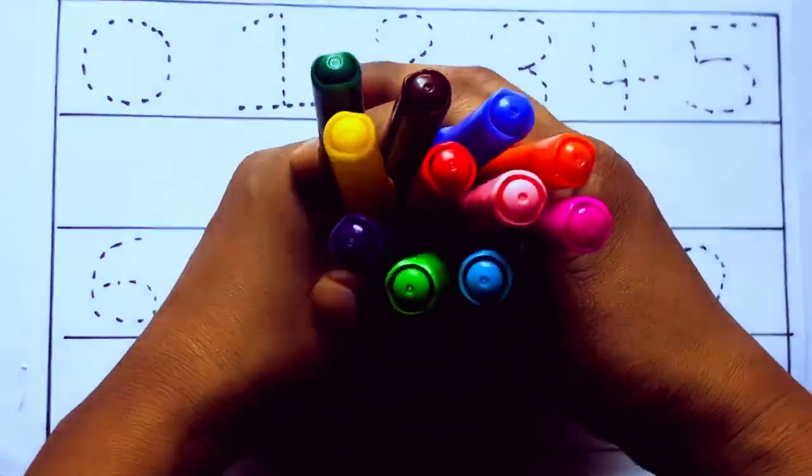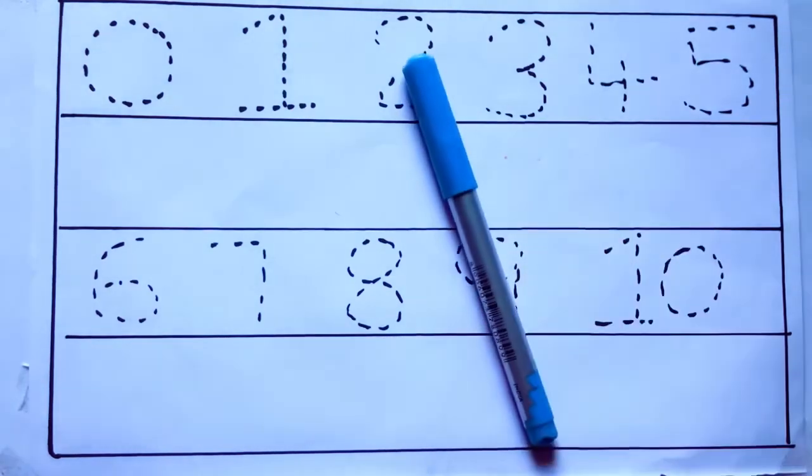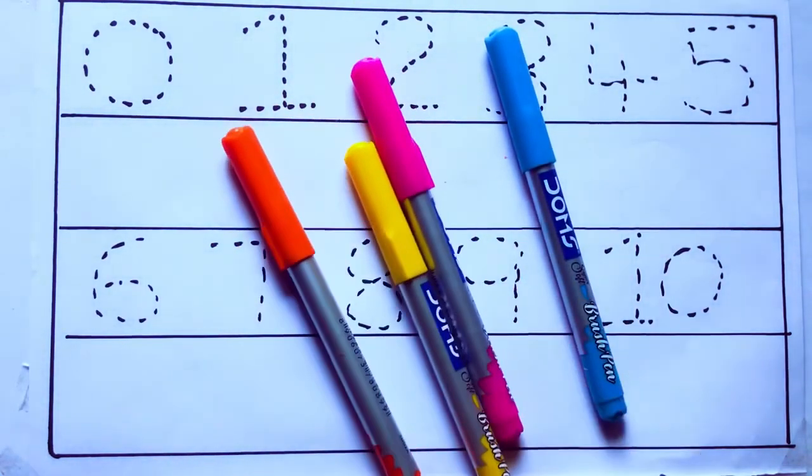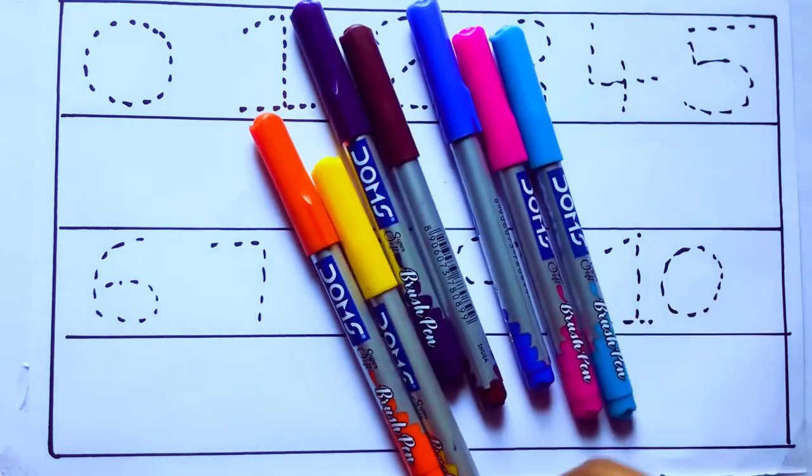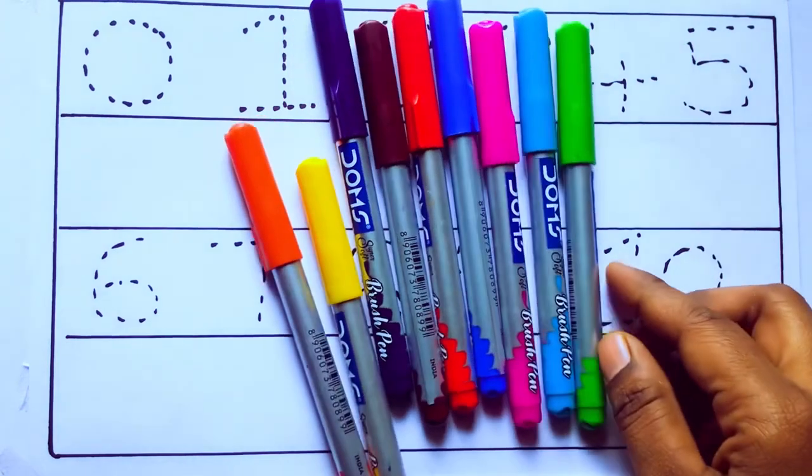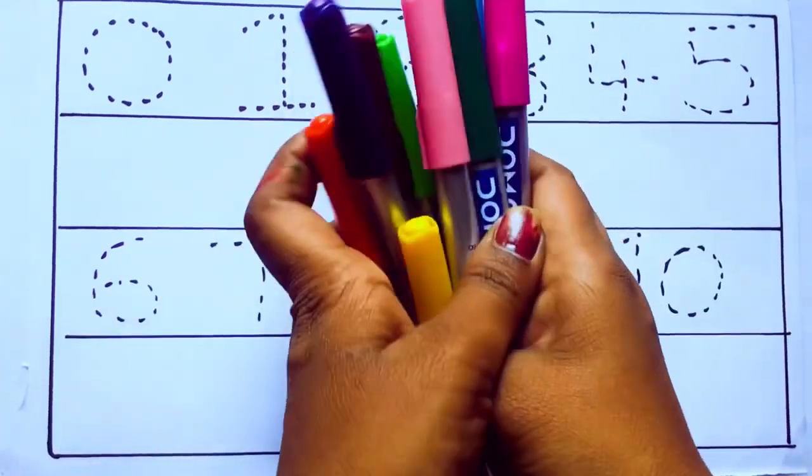Let's learn some colors. These are all the color pencils. Let's learn the names: sky blue color, pink color, yellow color, orange color, violet color, blue color, brown color, red color, green color, and pink color.